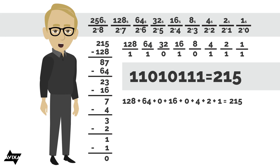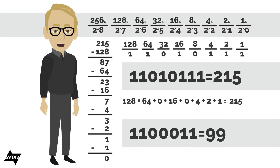If I were to take 99 in decimal and express that in binary, that would be 1, 1, 0, 0, 0, 1, 1. In other words, 64 plus 32 plus 0 plus 0 plus 0 plus 2 plus 1 equals 99. So that's how we would convert back and forth from decimal and binary.